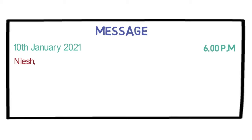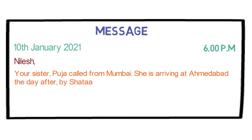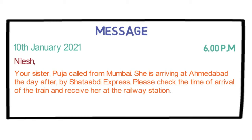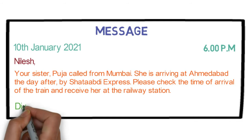Step 4. Write the body of the message which will be something like this. Your sister Puja called from Mumbai. She is arriving at Ahmedabad the day after by Shatabdi Express. Please check the time of arrival of the train and receive her at the railway station. Now, let's write step 5 which is the name of the person who wrote the message. In our case, it will be Divya.